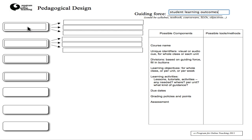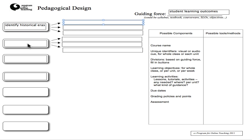I teach history, so the first student learning outcome I'm going to put here is the ability to identify historical eras. The second one is the ability to analyze sources, and the third one is to create a historical thesis.